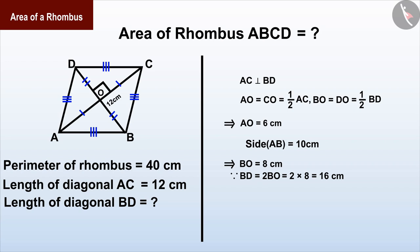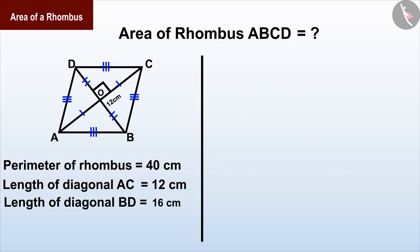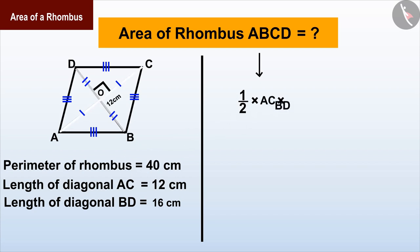Let us now find the area of rhombus. As we have read, the area of rhombus is half the product of the length of the diagonals. Substituting the values of AC and BD, the area of rhombus is 1/2 times 12 centimeter times 16 centimeter.